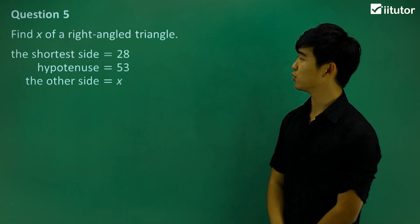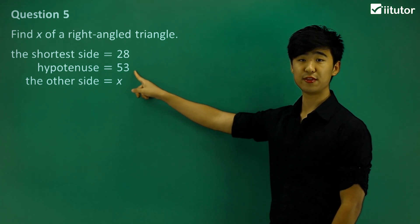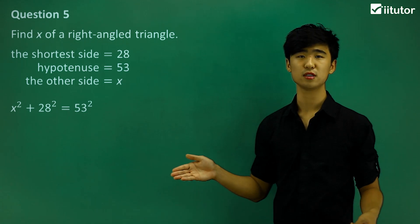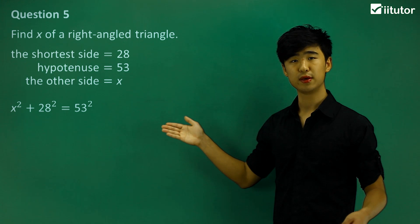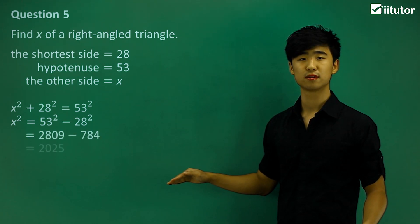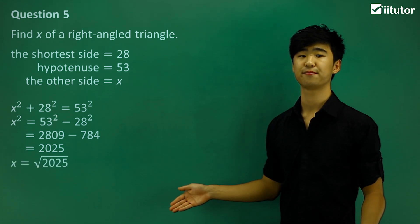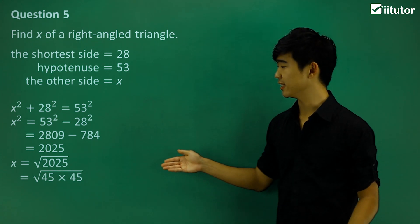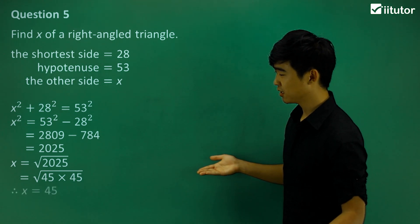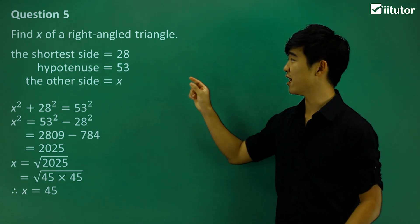Question number 5: find x of a right-angled triangle. The hypotenuse is 53, and the other two sides are x and 28. Writing out the Pythagoras theorem: x squared plus 28 squared equals 53 squared. We move 28 squared to the other side and calculate, getting x squared equals 2025. We can write 2025 as 45 squared, or 45 times 45. Cancelling the square root sign gives us x equals 45.